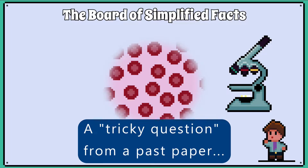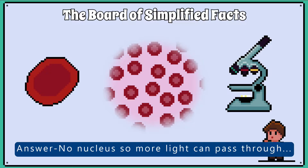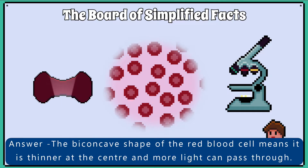A tricky question from a past paper asked why a red blood cell appeared paler at the centre when looking at it through a light microscope. You could have answered either that it has no nucleus, or that it is thinner at the centre due to the biconcave shape, so more light passes through the centre.